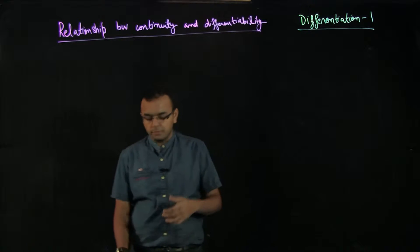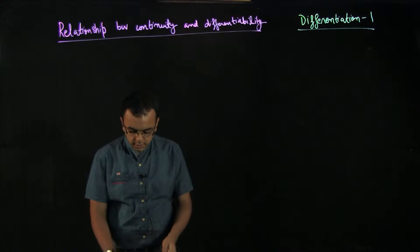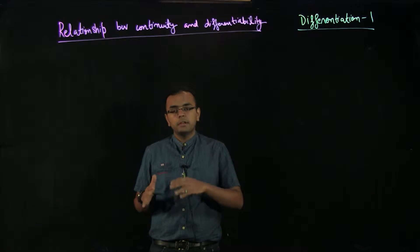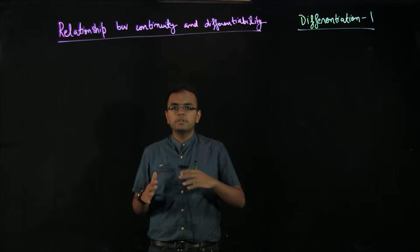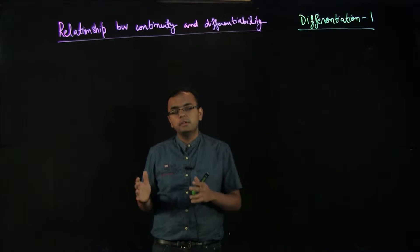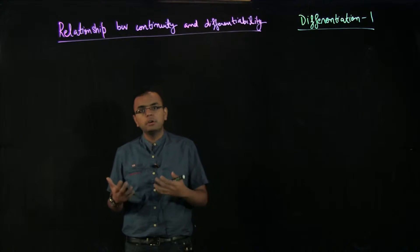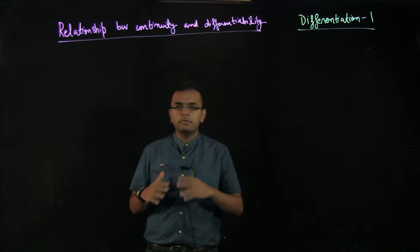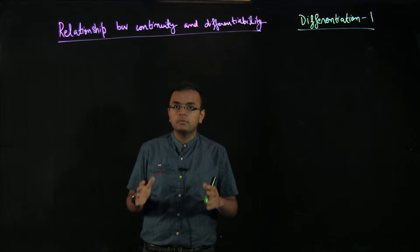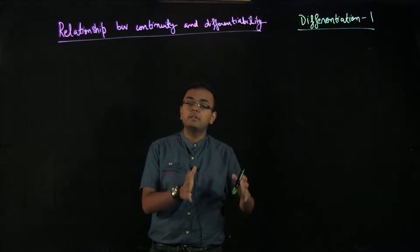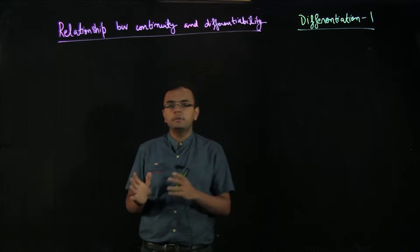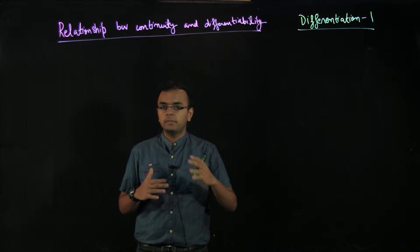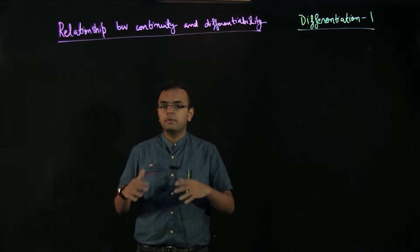As discussed in previous videos, differentiability is defined when the graph of a function is smooth, and continuity means the curve of a function does not have any breaks. So differentiability is related to smoothness, and continuity is related to whether there are any breaks in the curve.